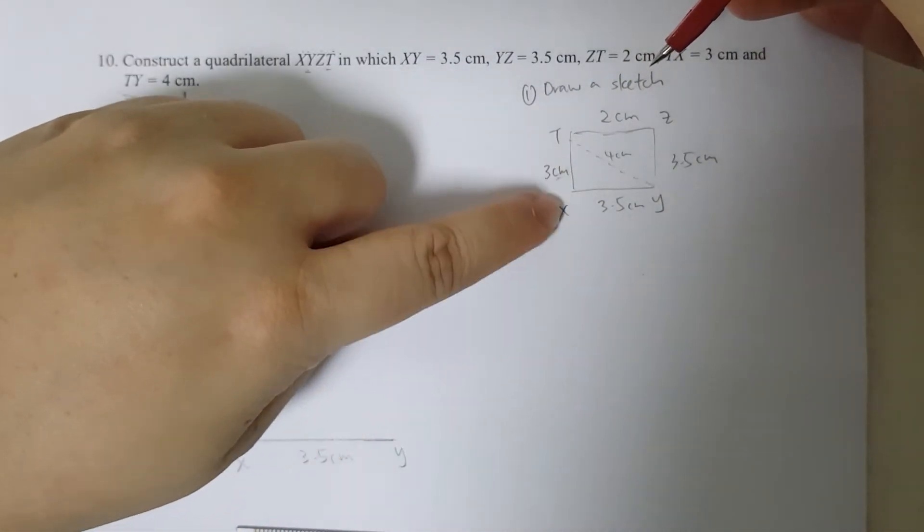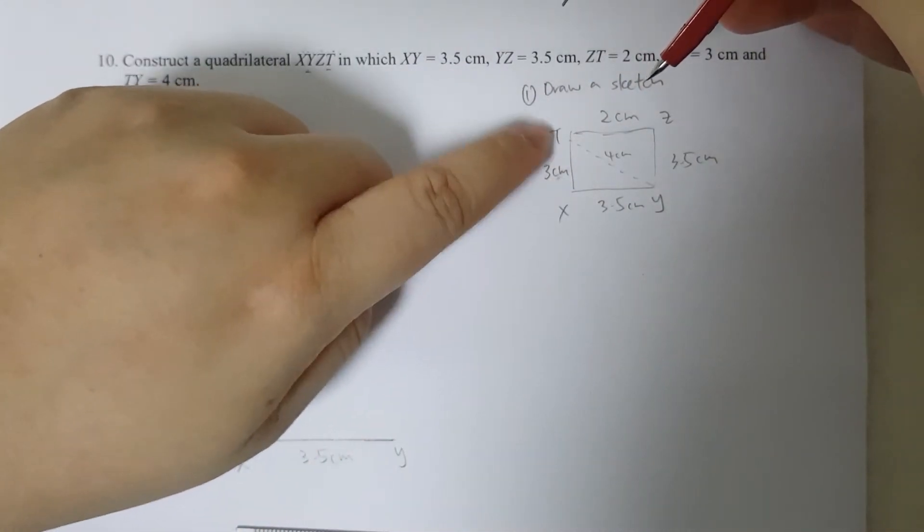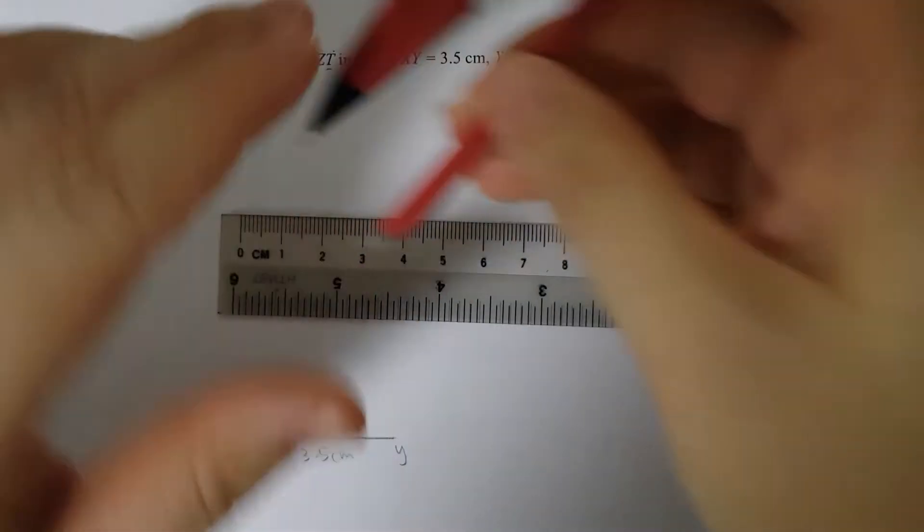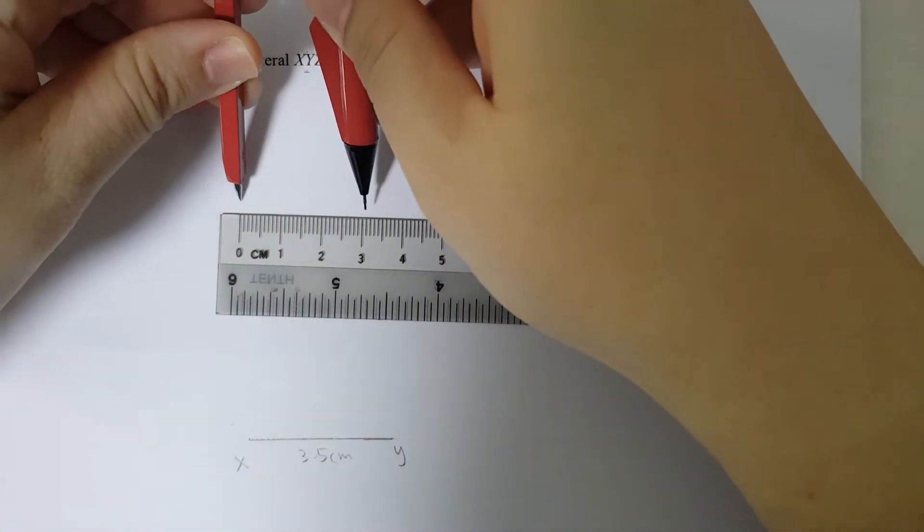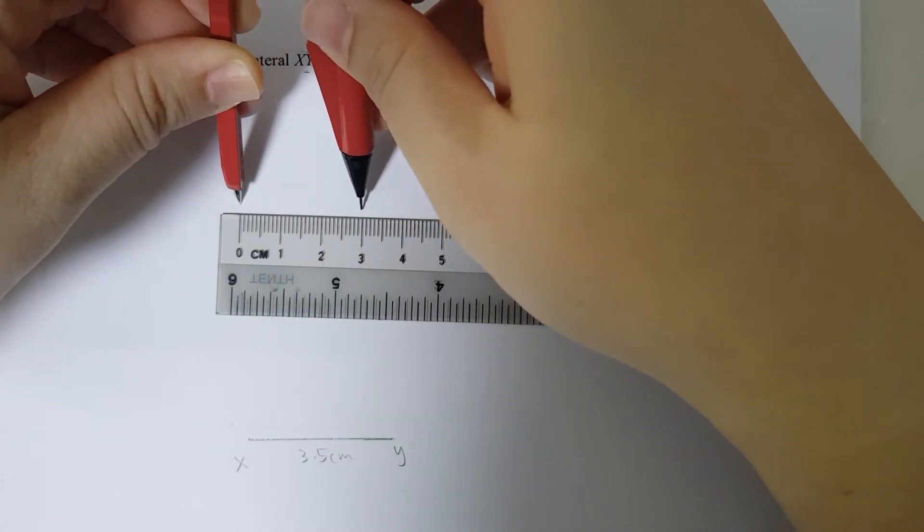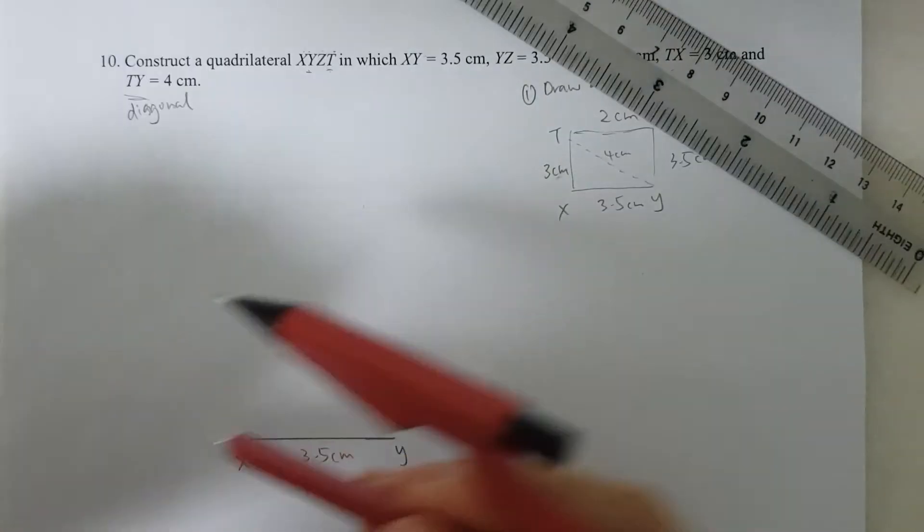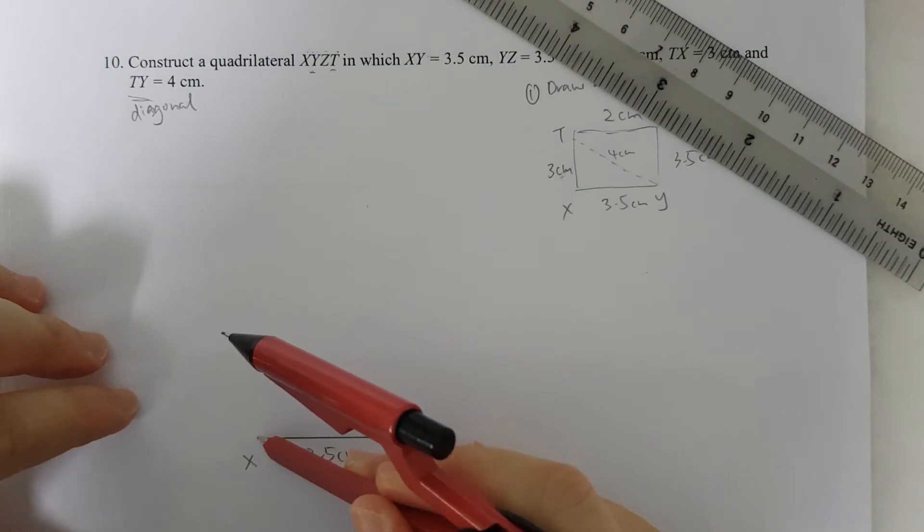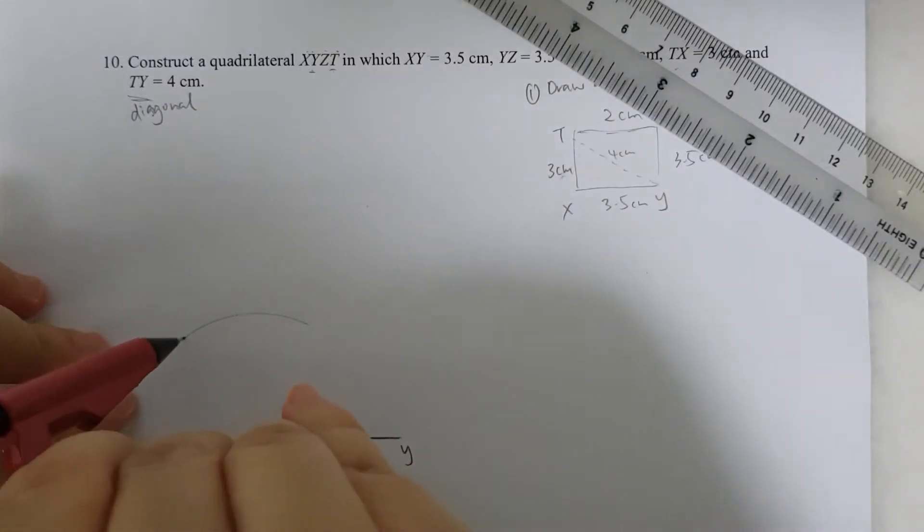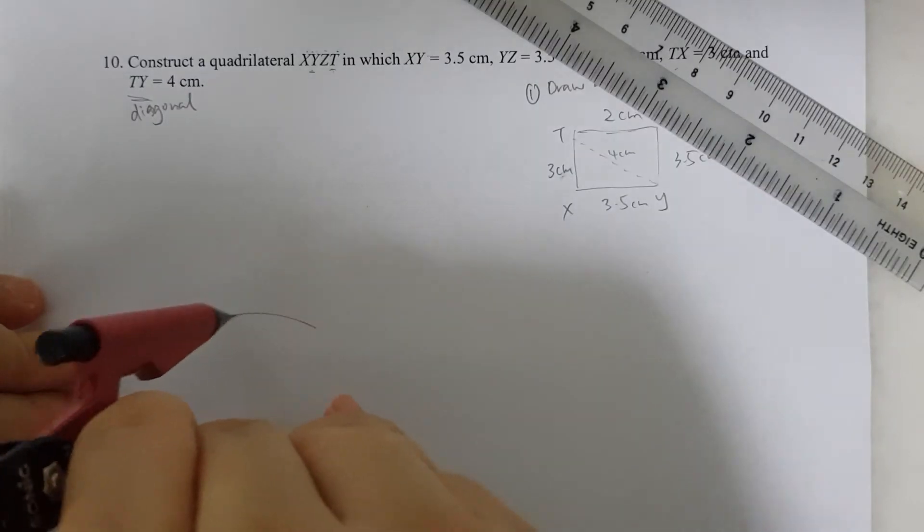I'm going to start by drawing for XT, or TX, which is 3cm. So I'm going to measure out 3cm, and I put my metal tip at X. I'm going to draw out the arc.